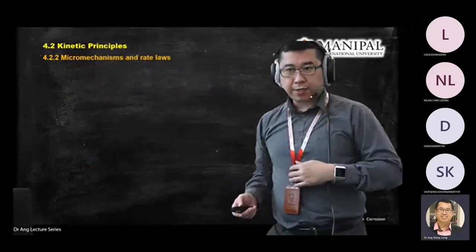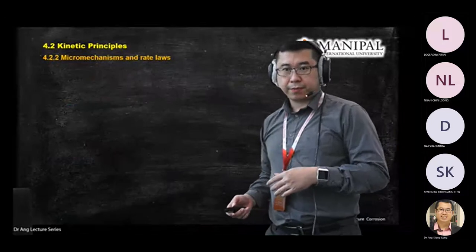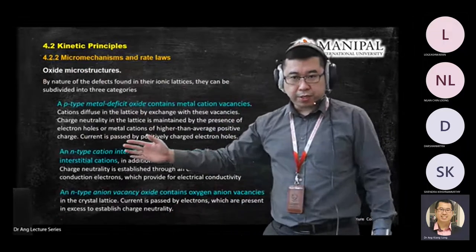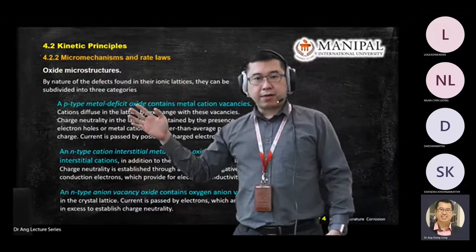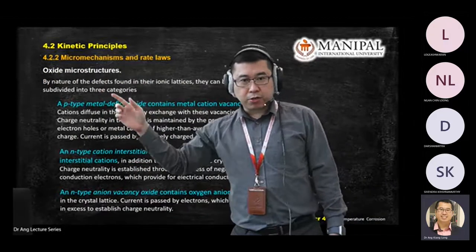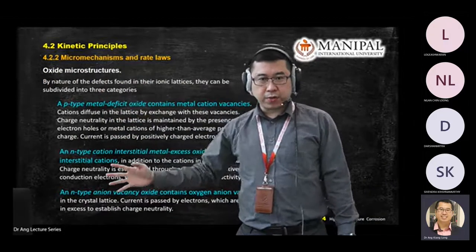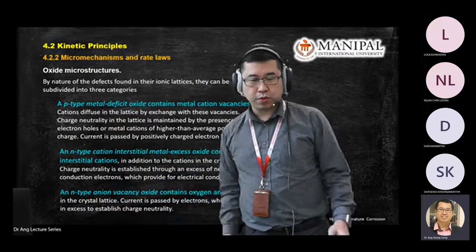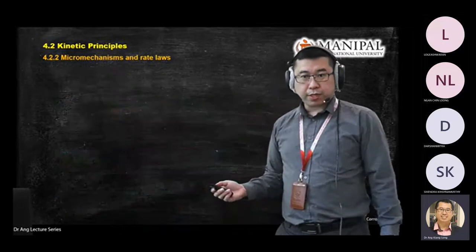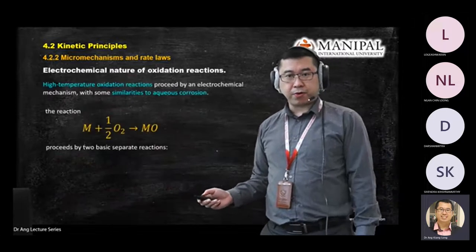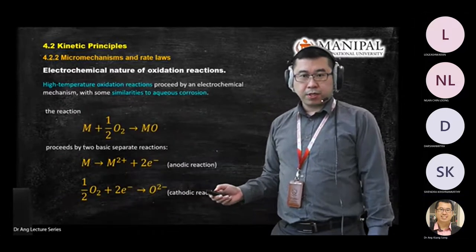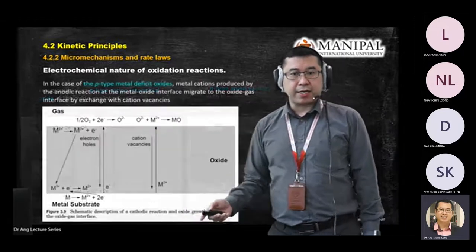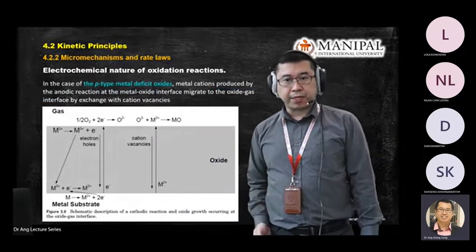Now, in the previous class, we mentioned some mechanisms of how the oxide microstructure works. We have three categories — p-type and n-type. I'm going to show you the diagram for these two types, on the left and right, and then another one for the p-type.